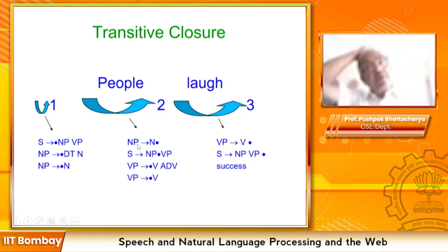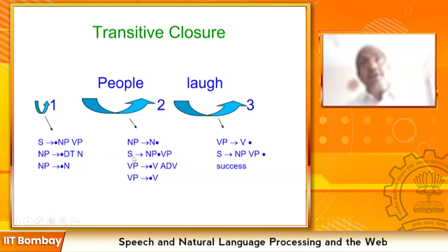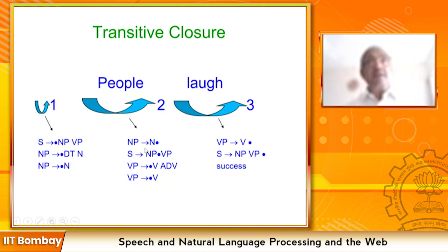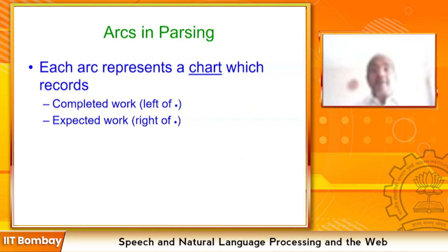Chart parsing solves the problem of demanding from the input grammatical entities which do not exist. For example, DT was brought into focus because of rule application, but DT was never demanded to be resolved from the data — so there was no backtracking after DT application. Similarly, the useless reduction in bottom-up parsing — where 'people' gets tagged as a verb — is also eliminated, because the previous chart wanted a noun, not a verb. The demerits of both approaches are thus reduced or eliminated.